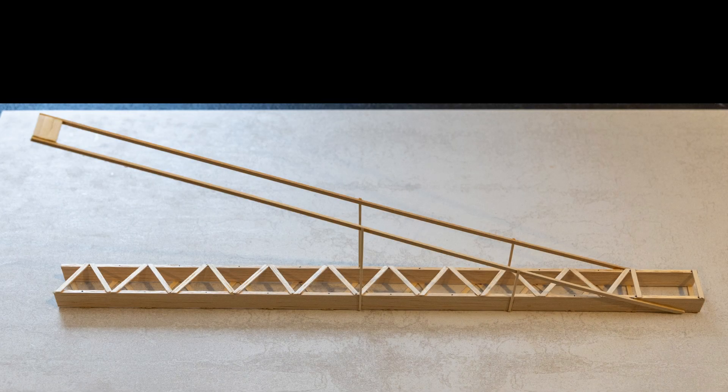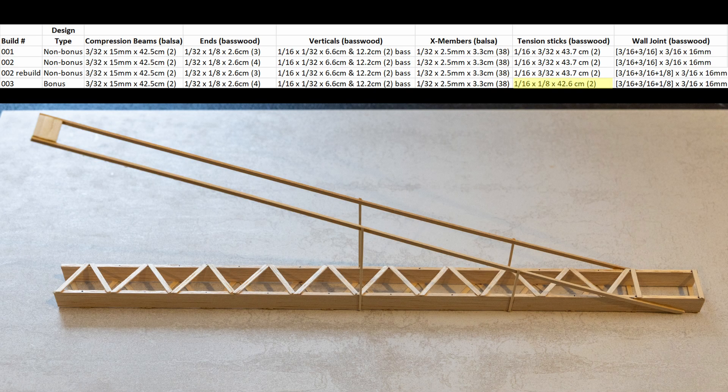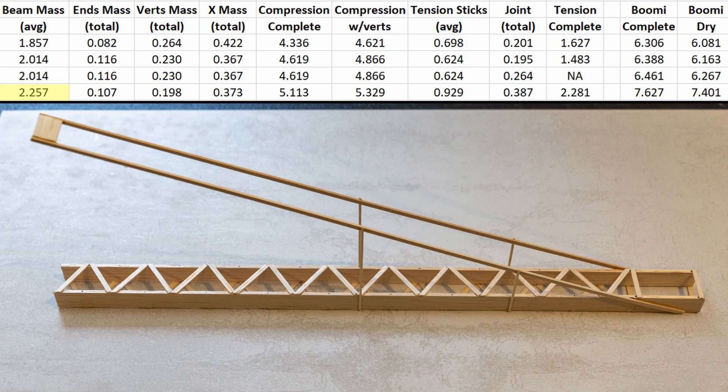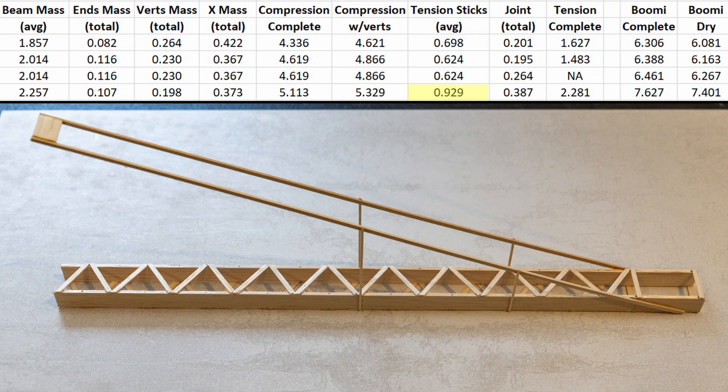Here is a picture of my first bonus attempt. I decided to keep the same wall joint size as the previous build. The most significant design change is with the tension sticks which are now using 1/16 by 1/8 basswood. You can see the length is slightly shorter at 42.6 centimeters due to the height of the boomy being 15 centimeters instead of 20. Because the loads are 33% higher, I have increased the mass of the compression beams to 2.257 grams, and you can see that the average tension mass has increased to 0.929 grams.